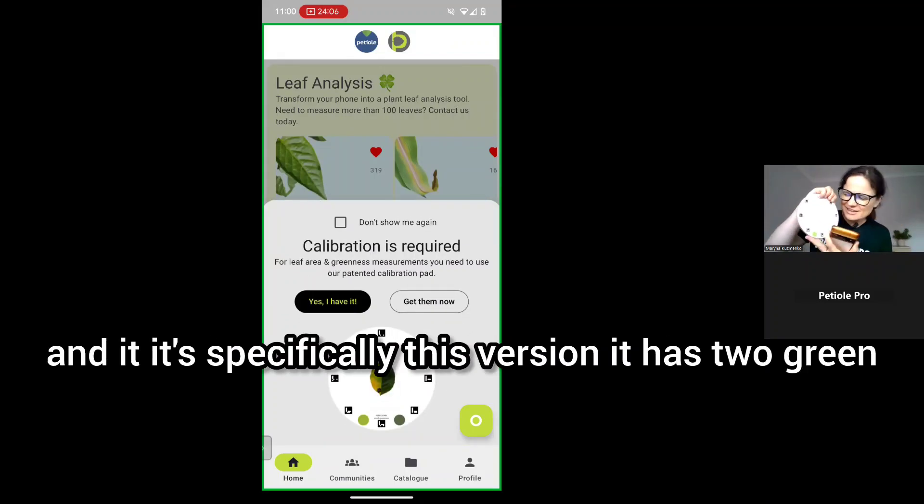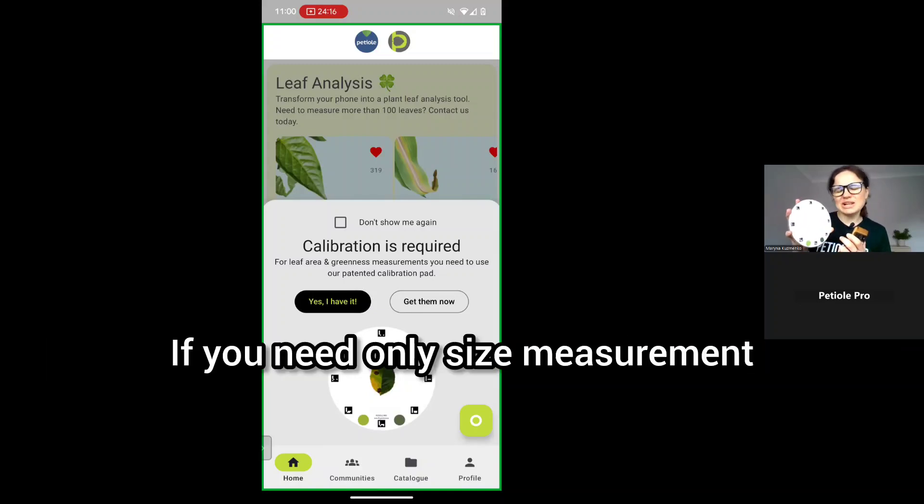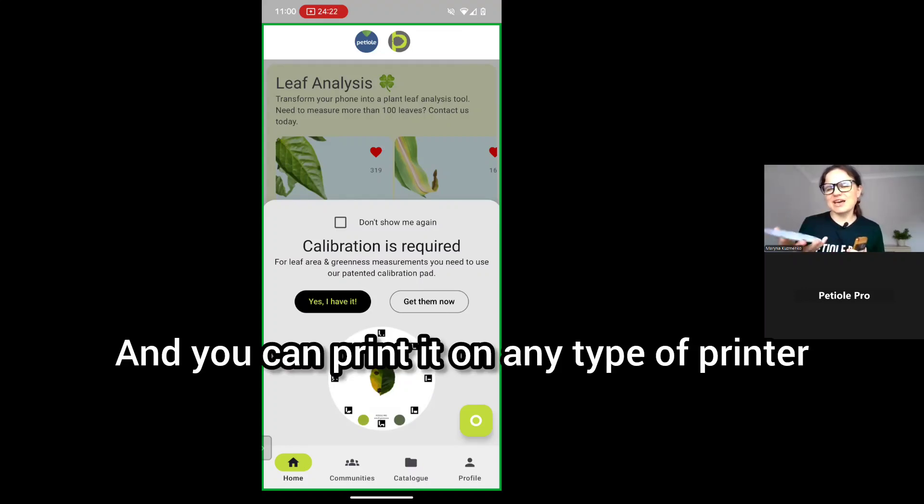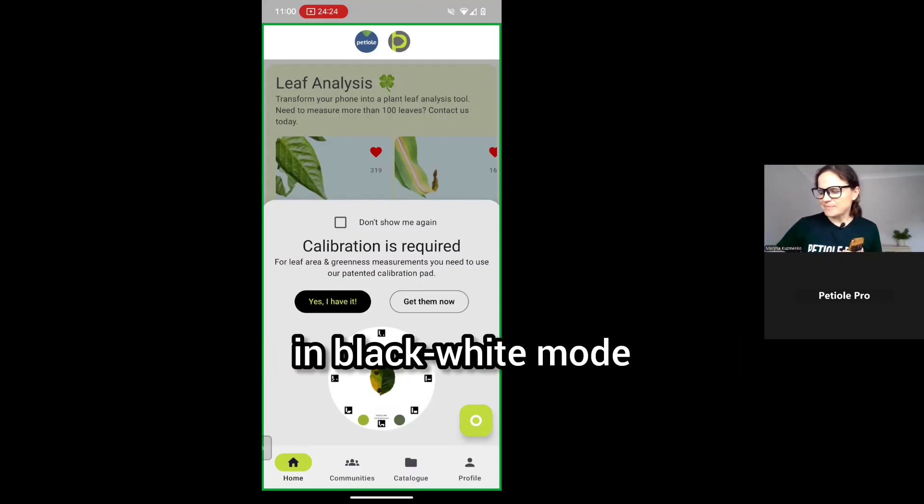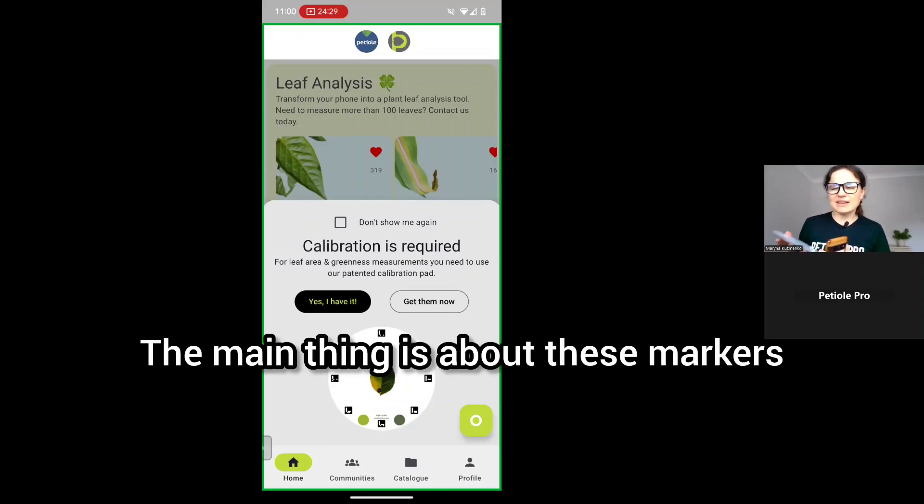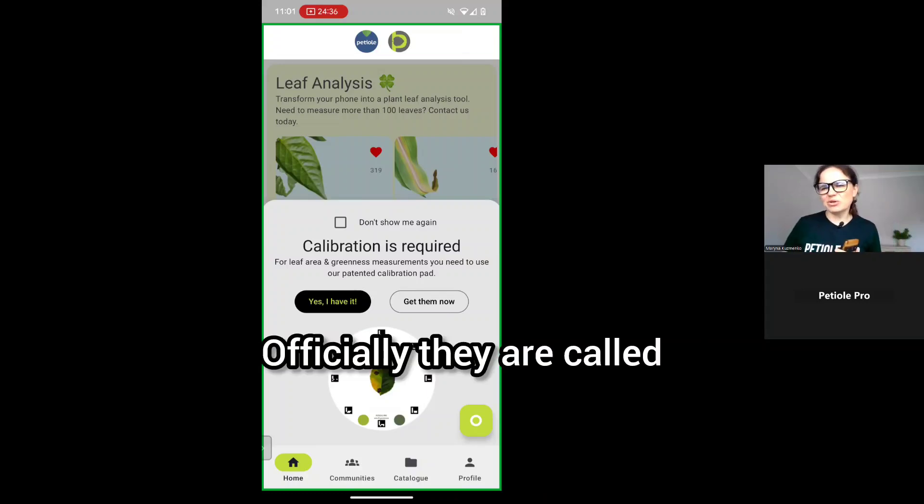Specifically this version has two green dots, but even without green dots it's okay. If you need only size measurement, you don't need these green dots. You can print it on any type of printer in black and white mode and it will work. The main thing is about these markers. You can see around eight markers. Officially they are called Aruko markers.